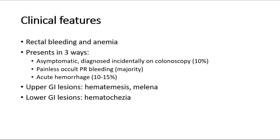As the AV lesions can occur throughout the GI tract, the degree of symptoms will depend upon the location and severity of the malformation. Upper GI lesions present as hematemesis or melena, whereas lower GI lesions, which are more common in angiodysplasia, often present as hematochezia.